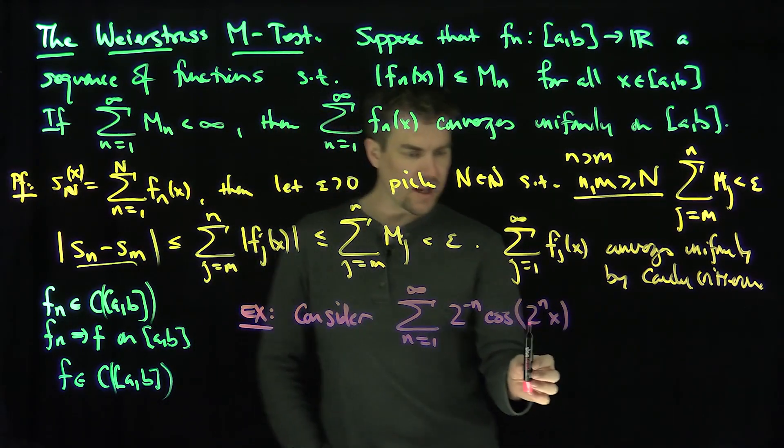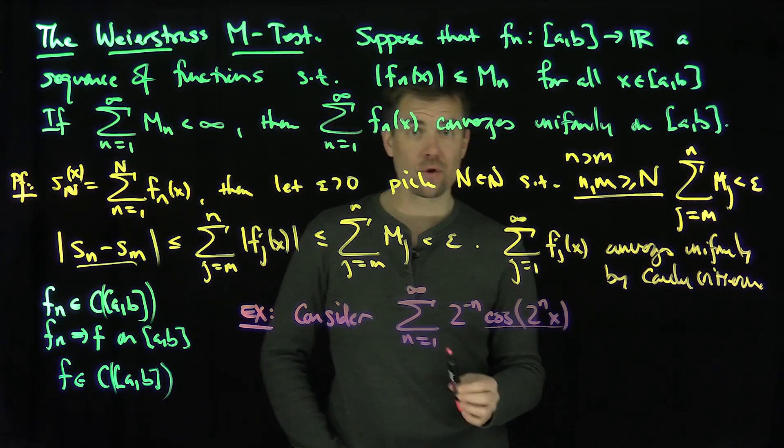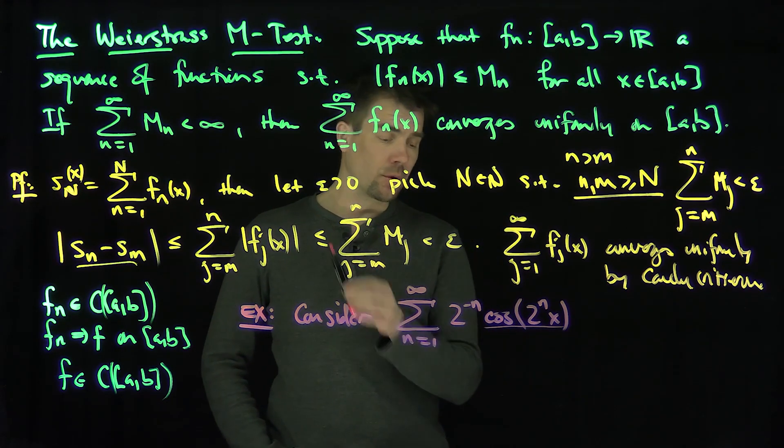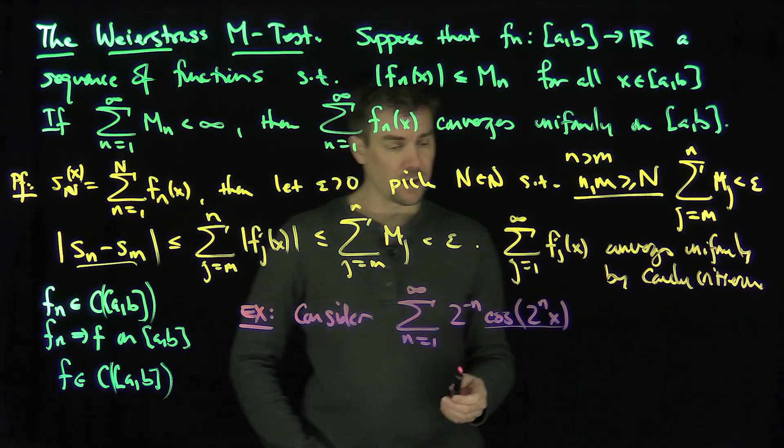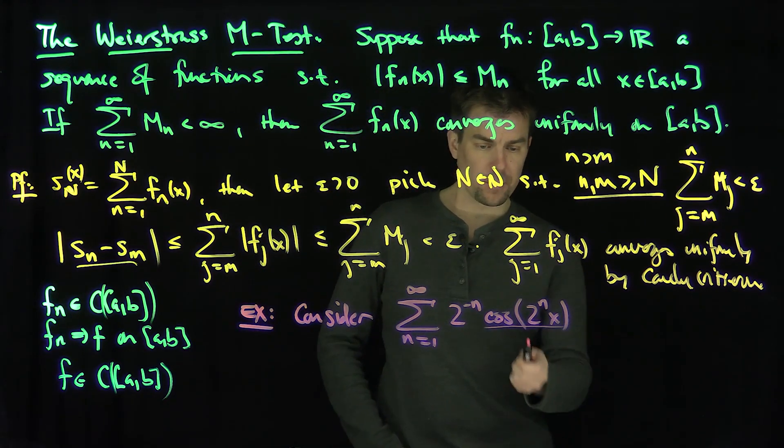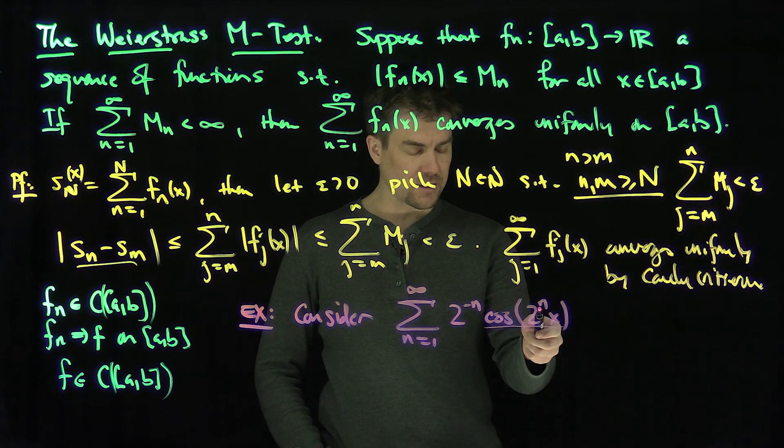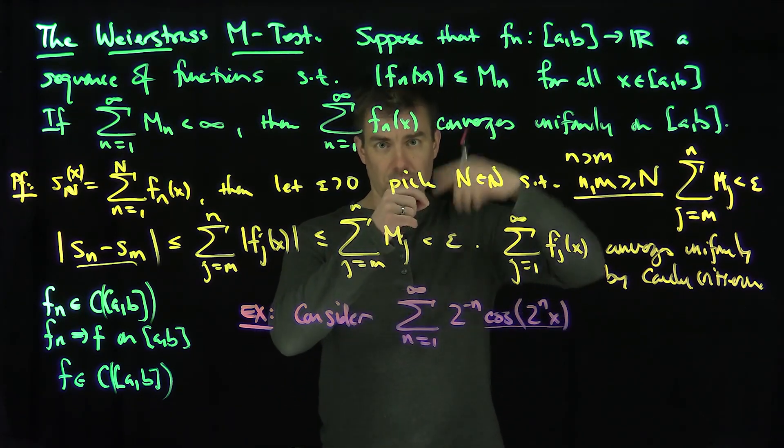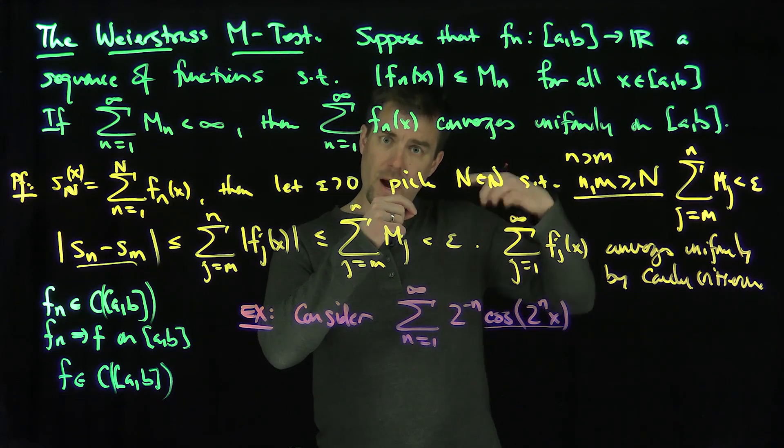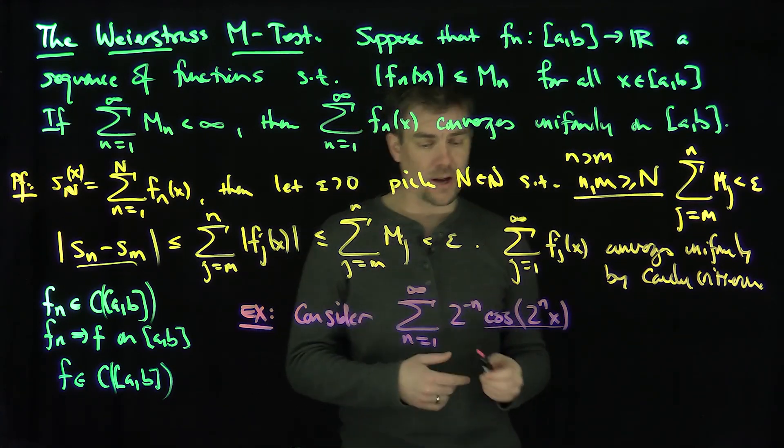So this is highly oscillatory. Each individual term, as n gets very large, you have a cosine of a humongous power of 2. If I plug in n equals 5, I get 32, plug in n equals 6, I get 64. Therefore, cosine of 64x oscillates a tremendous number of times between 0 and 2π. So these are highly oscillatory things.